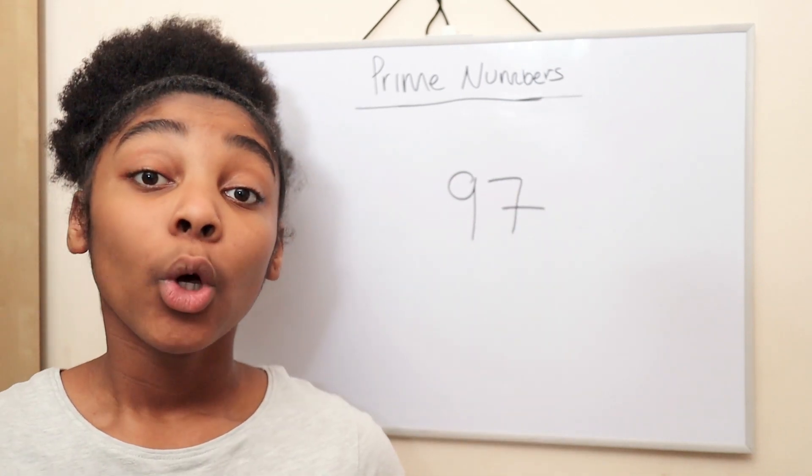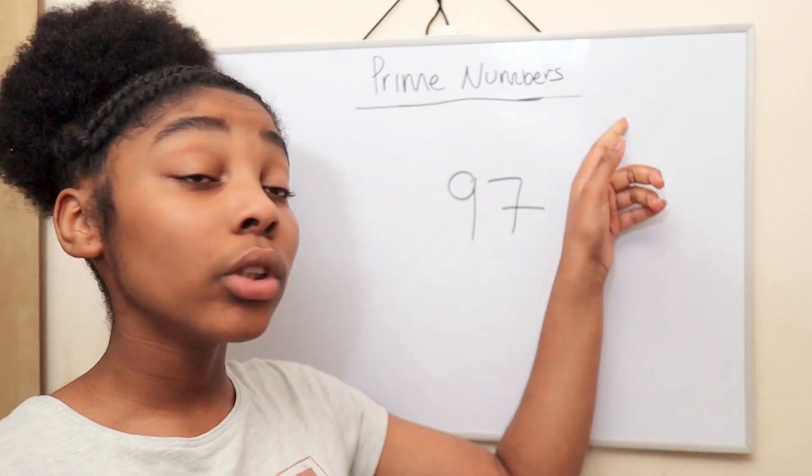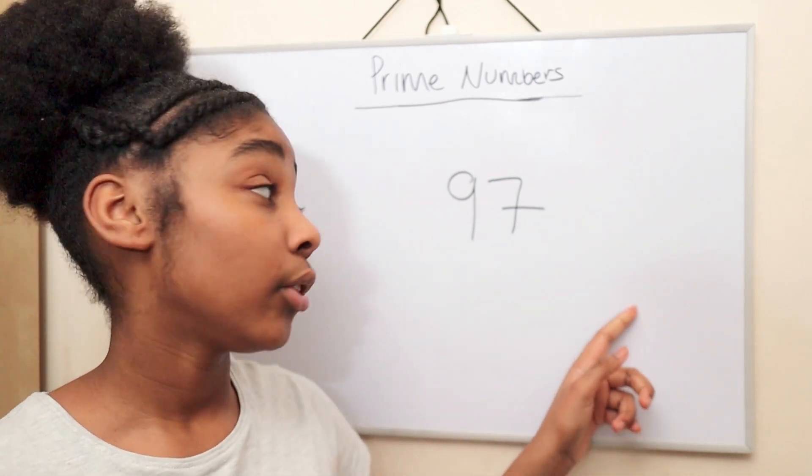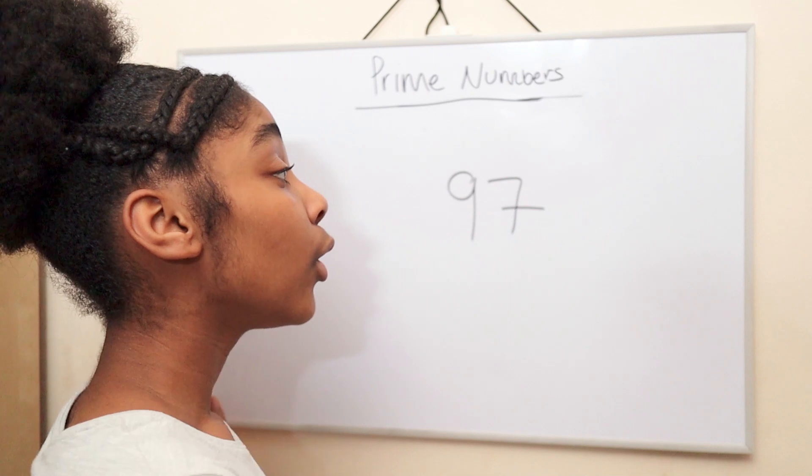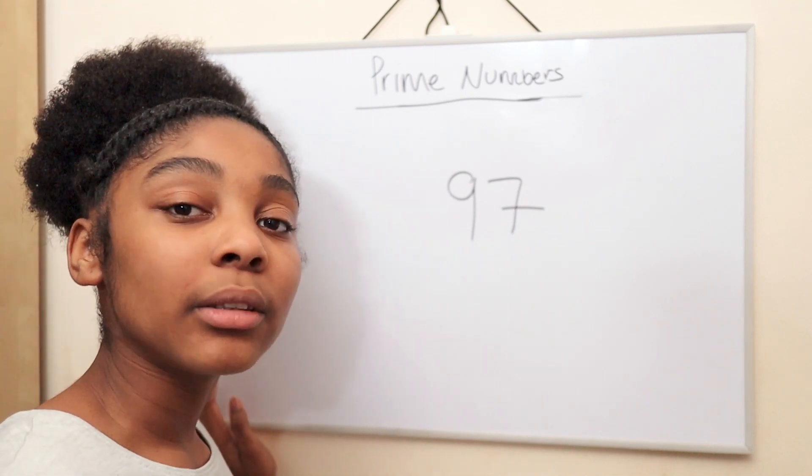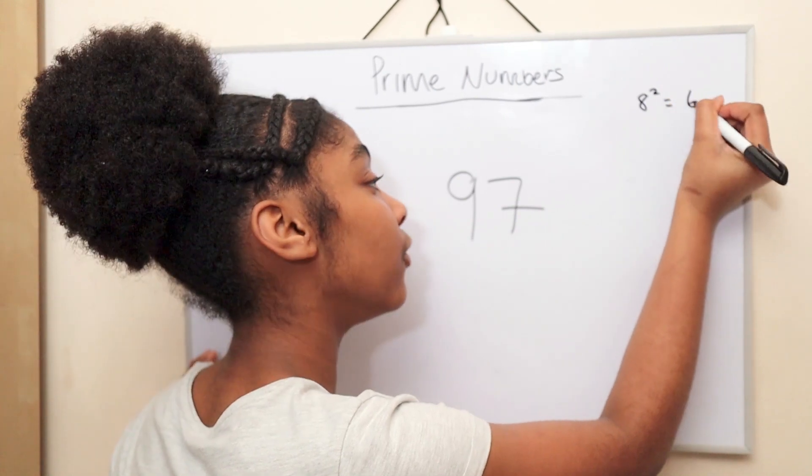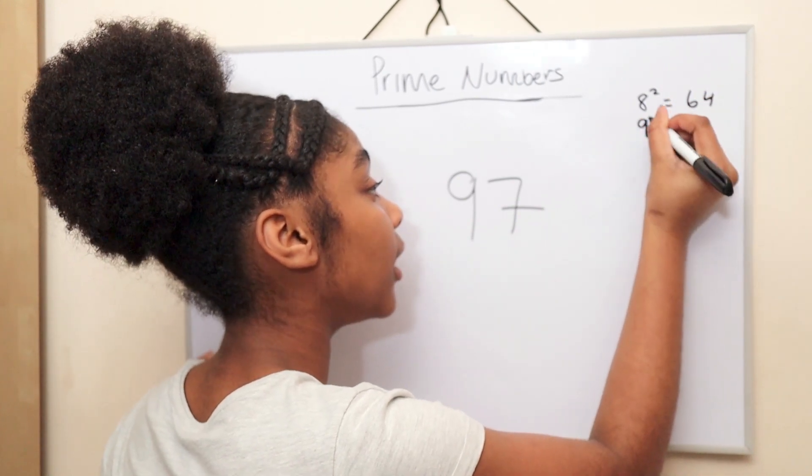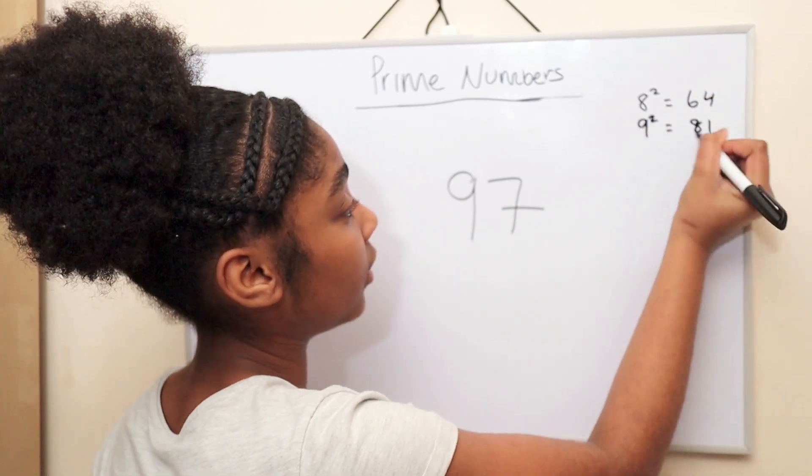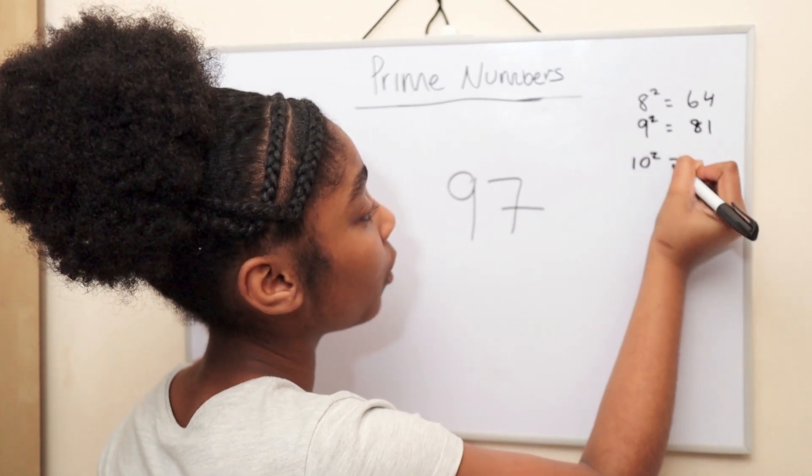For the first step we'll need to write down all the squared numbers that at least go up to 97. We can start from 8 squared to make it easier. 8 squared is 64, 9 squared is 81, and 10 squared is 100.